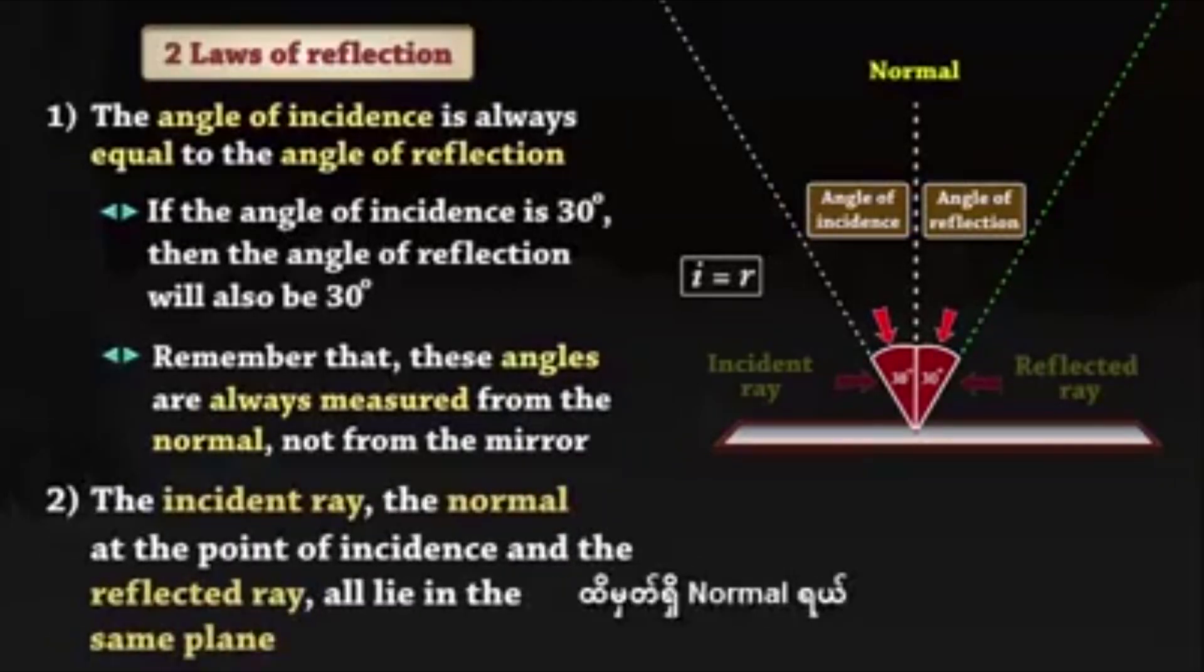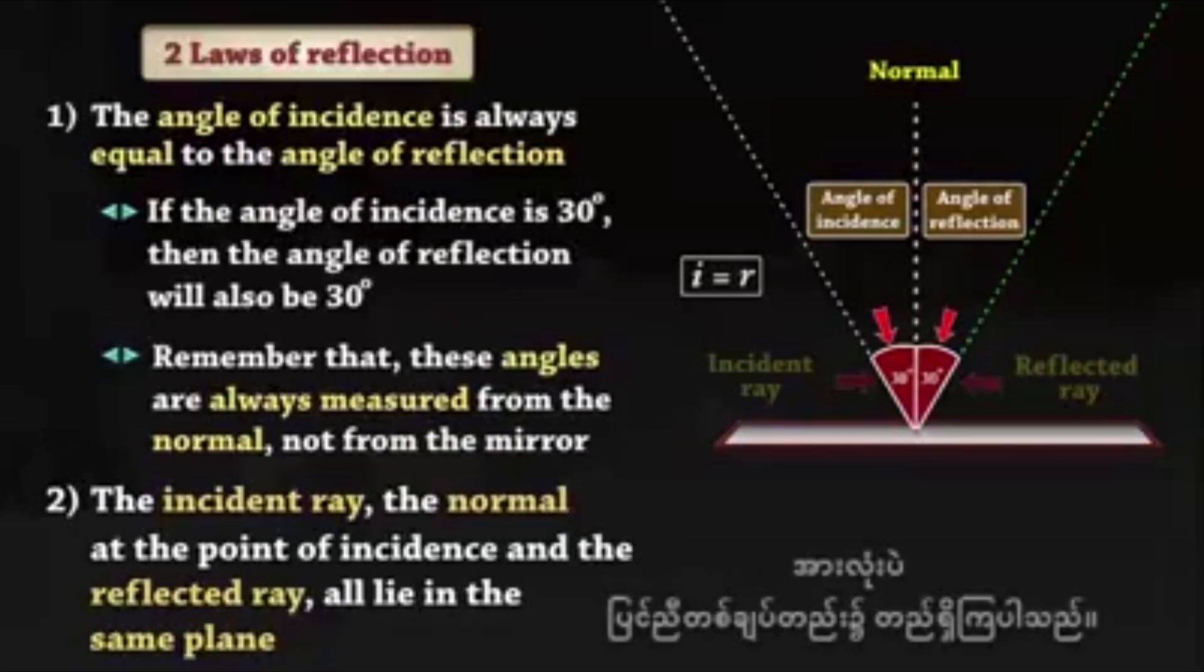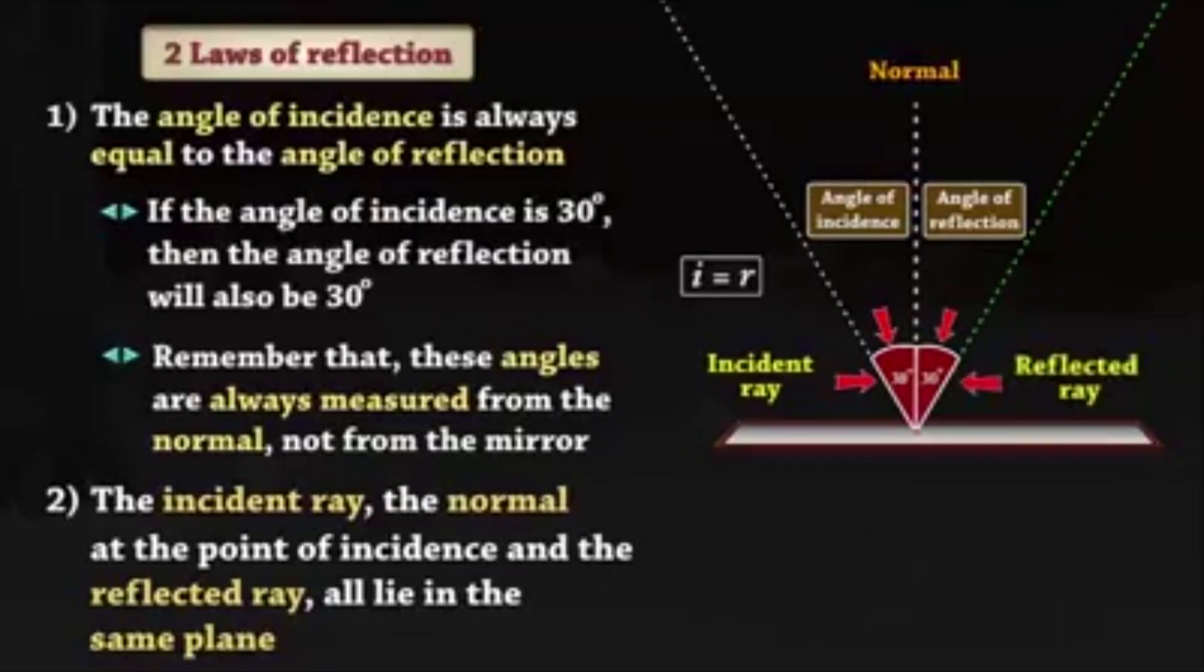The incident ray, the normal at the point of incidence, and the reflected ray, all lie in the same plane.